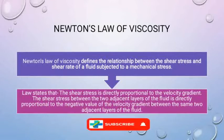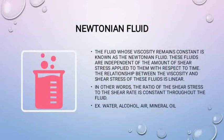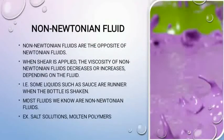Moving to Newtonian fluids — the fluid whose viscosity remains constant is known as a Newtonian fluid. These fluids are independent of the amount of shear stress applied to them with respect to time. The relationship between viscosity and shear stress is linear; in other words, the ratio of shear stress to shear rate is constant throughout. Examples include water, alcohol, air, and mineral oil.